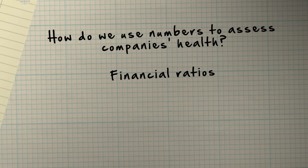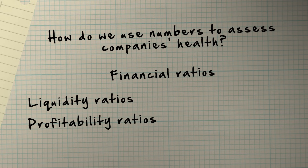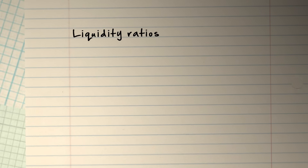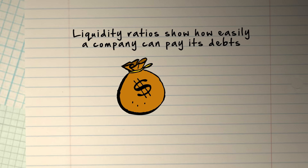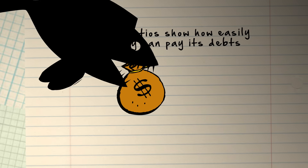Very common types of financial ratios are liquidity ratios, profitability ratios, and leverage ratios. Liquidity ratios can tell us how easily a company can pay its debts so that the company doesn't get eaten up by banks or other creditors.